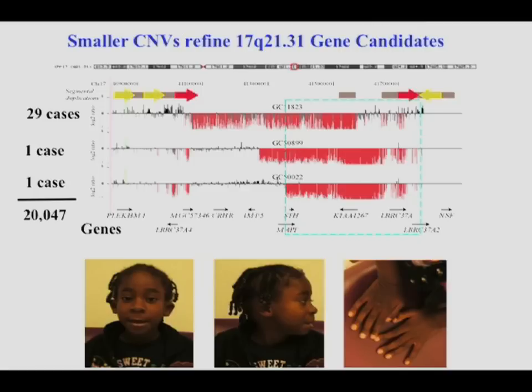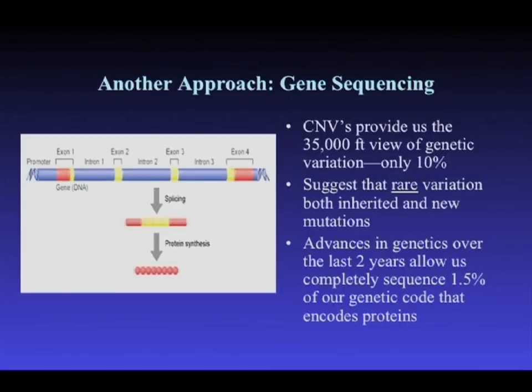After a while we realized the resolution of diagnostic arrays is too limited to get to the specific gene. But now technology allows us to sequence for about $1,000 all the protein-coding sequence — of the 20,000 genes and roughly 190,000 exons, we can get information on about 90% of them with high accuracy. This has really transformed the field. While CNVs give us the 35,000-foot view, if we really want to get the specific genes responsible for the vast majority of cases with developmental delay and autism, we need to resequence the genes — what we call exome sequencing.